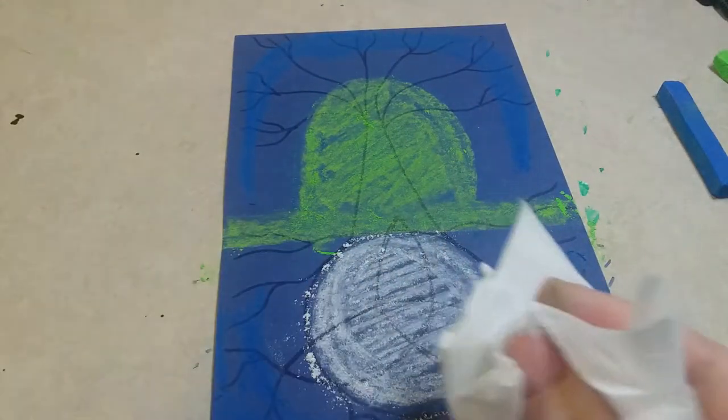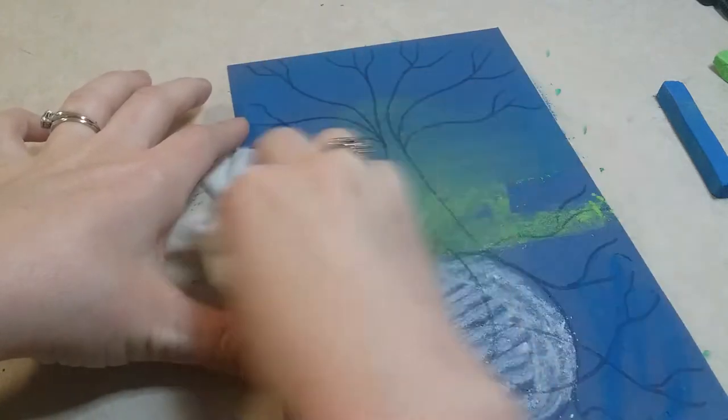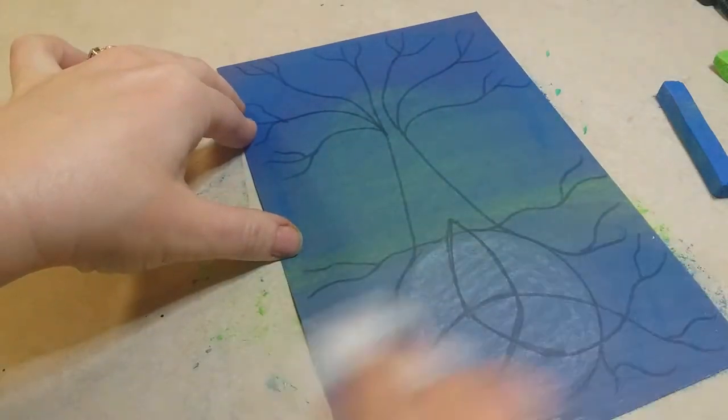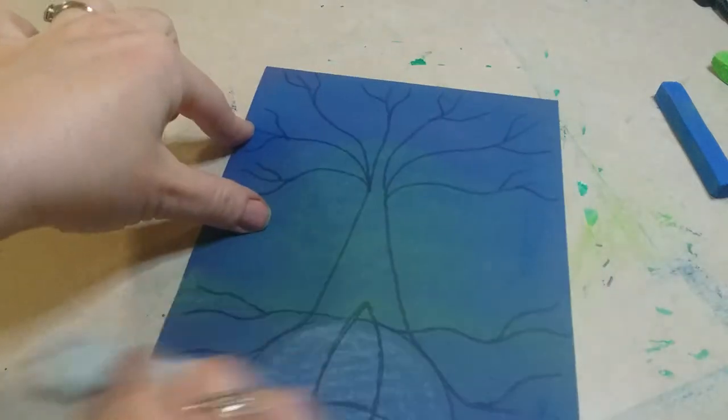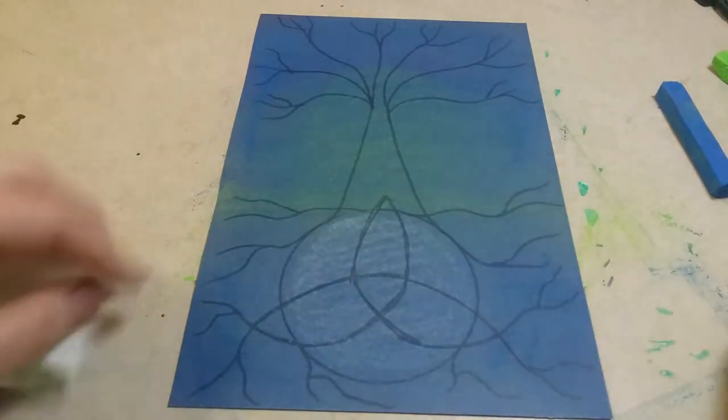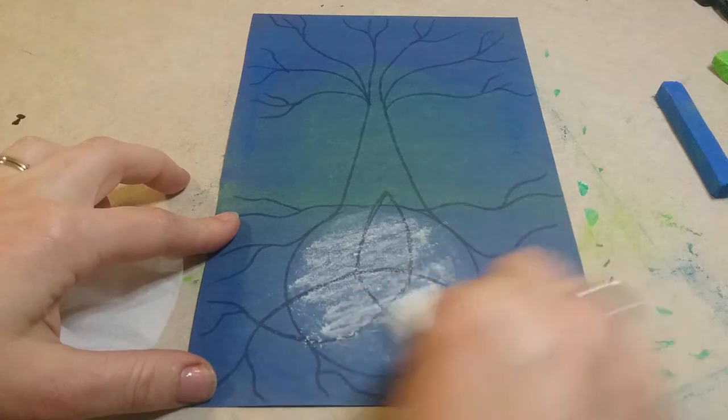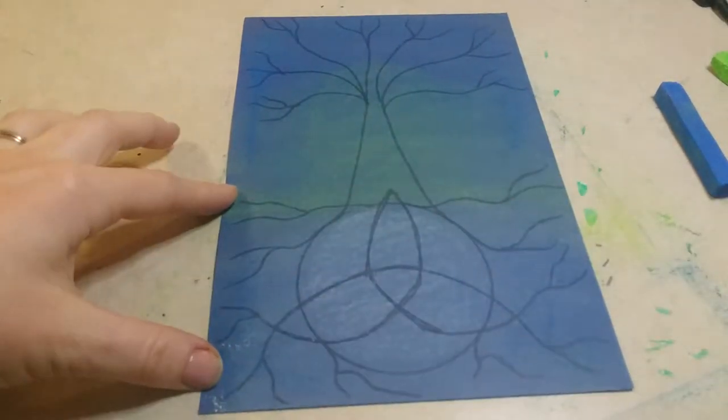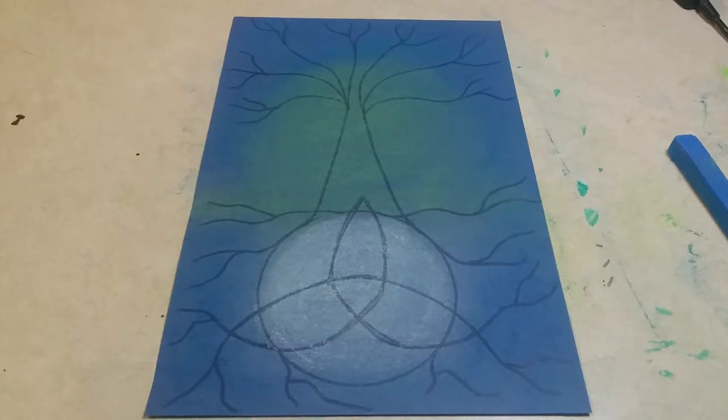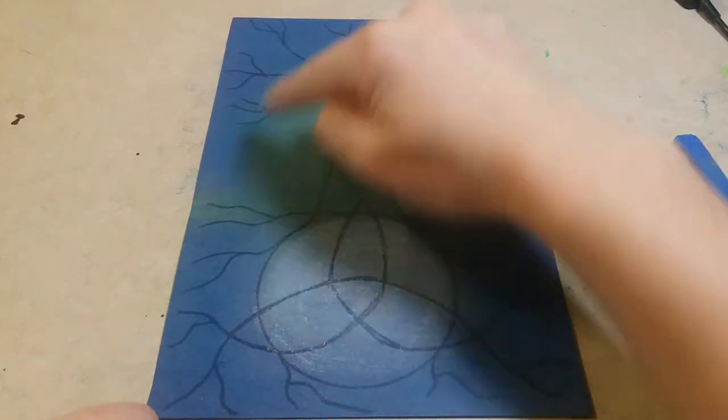Once you have that all colored in, you guys are going to get a tissue and you are going to blend it back and forth on your paper. What will end up happening is it will erase some of it, so if you feel like it's completely gone and you need to add some more, just go ahead, add some more chalk and blend until you're happy. Before you begin painting it should look something like this where the circle is much lighter and you have this kind of green glow that's going around the tree.